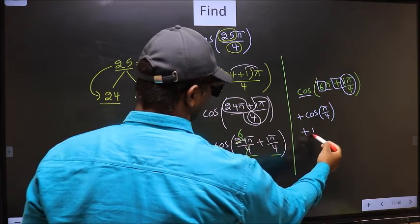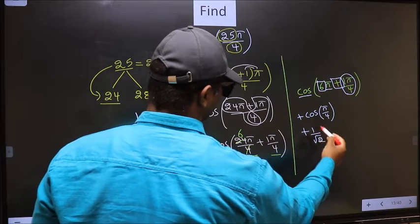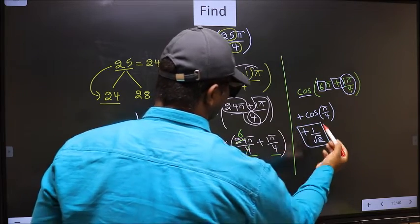So plus cos pi by 4 is 1 by root 2. This is our answer.